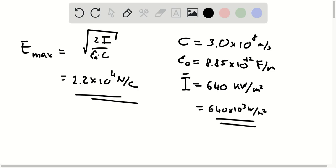And so what you can read off is the speed of the wave in the medium, the permittivity of the medium, the average intensity of the radiation, and the maximum electric field of the radiation.